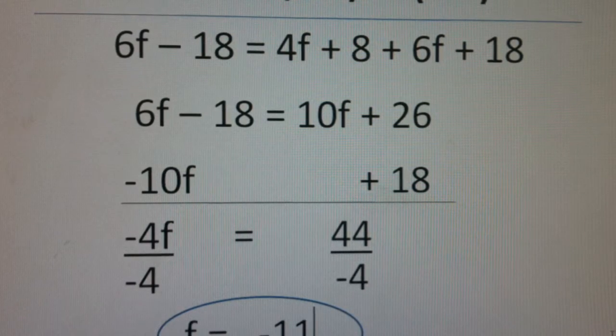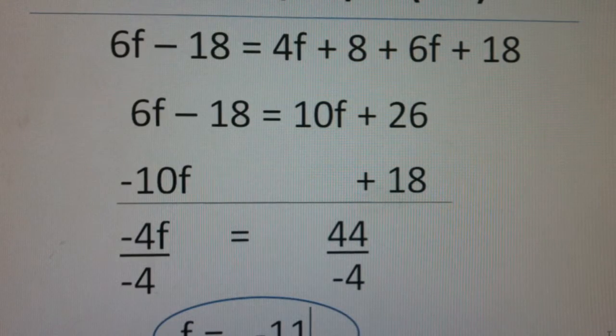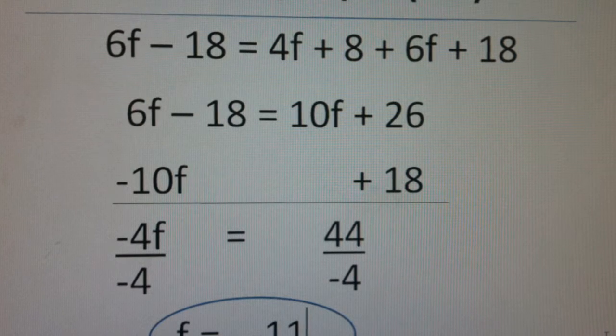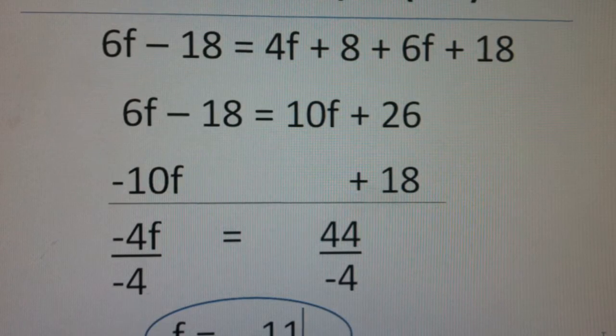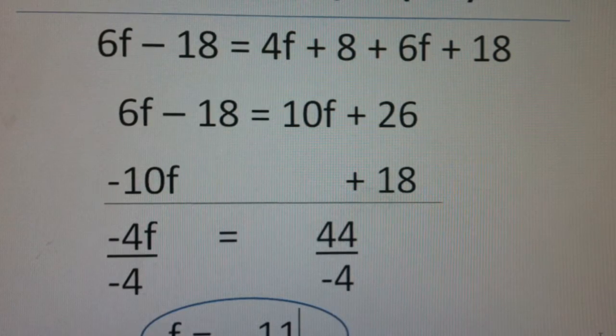First distribute, then combine like terms. You want variables on one side, numbers on the other. When you move it to the other side, it becomes the opposite. So we distributed the 6, the 4, and the 6.